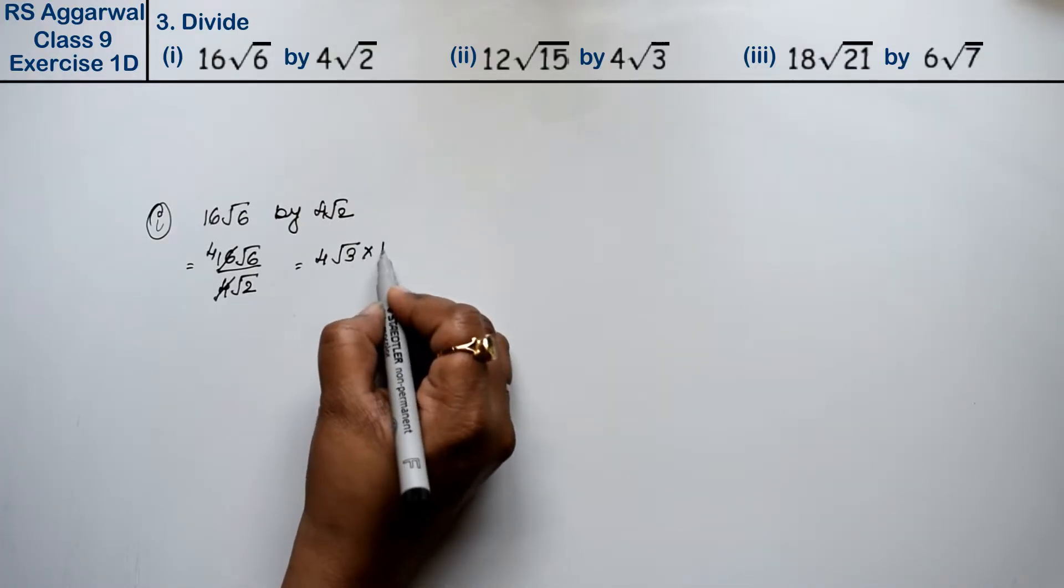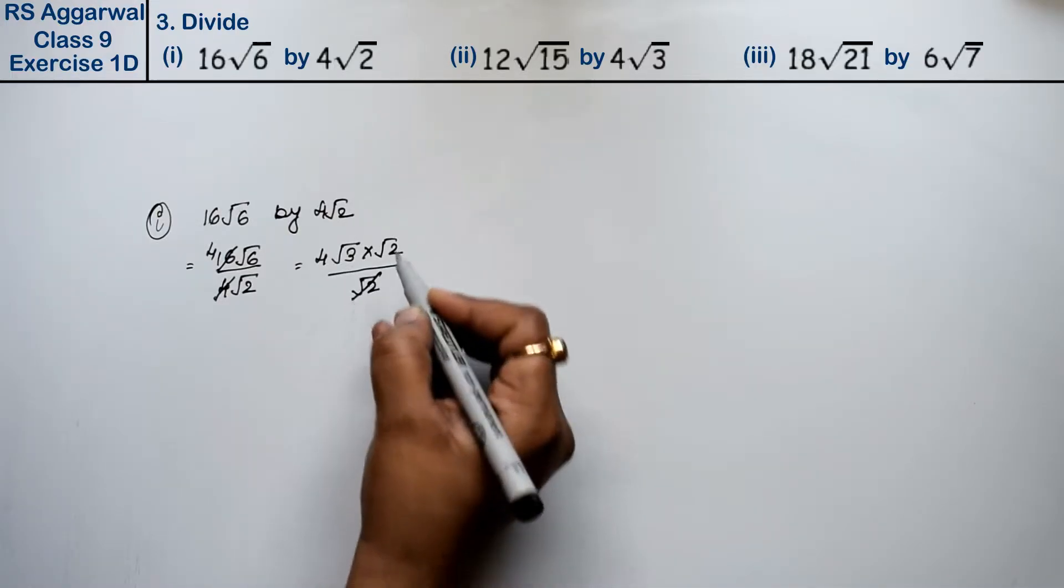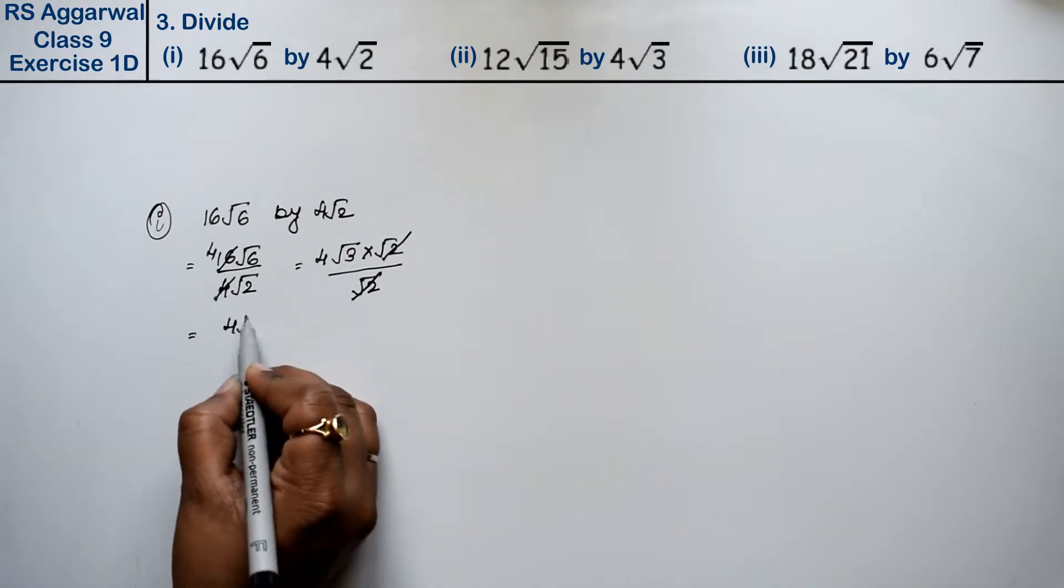√3 times √2 upon √2. √2 cancels with √2, so the answer is 4√3.